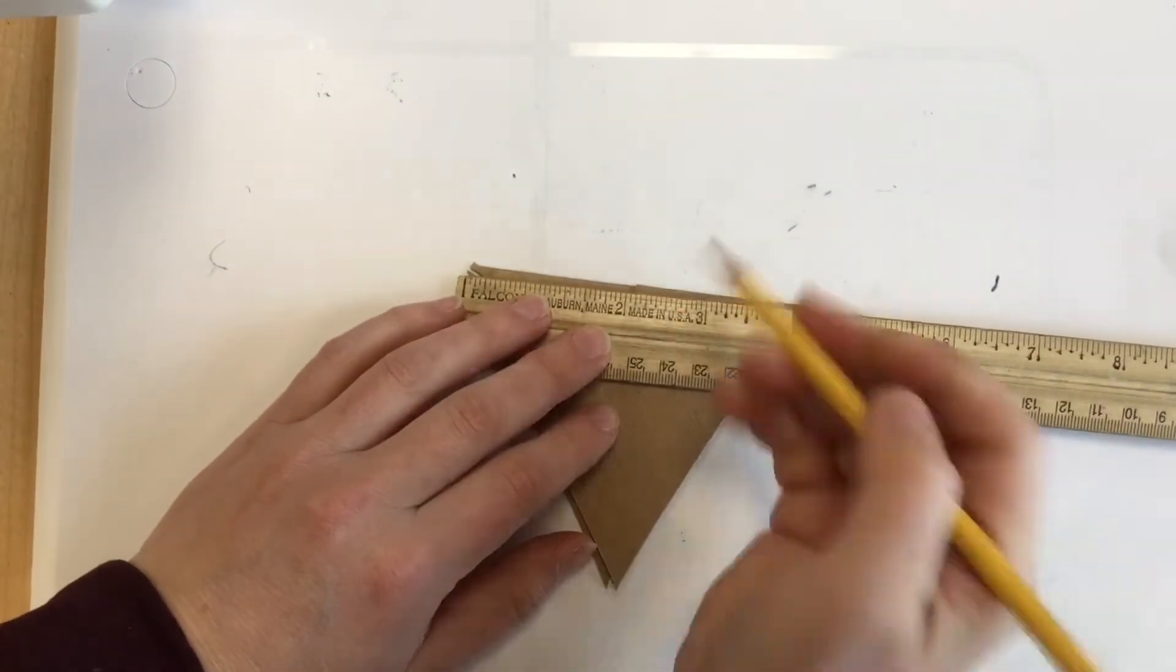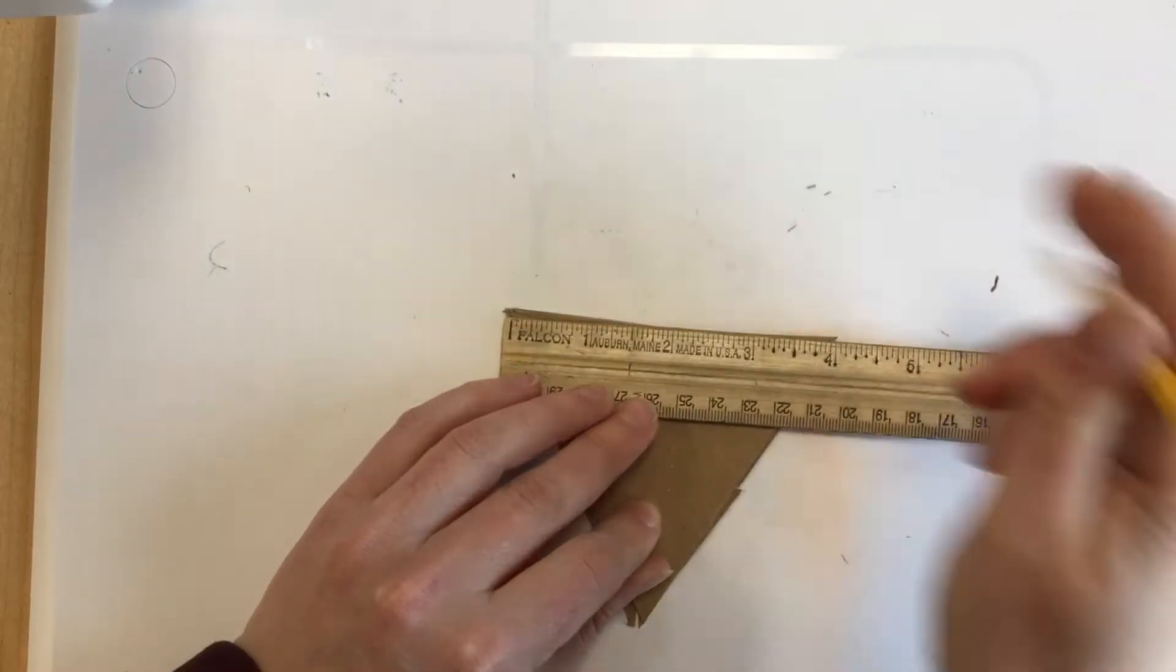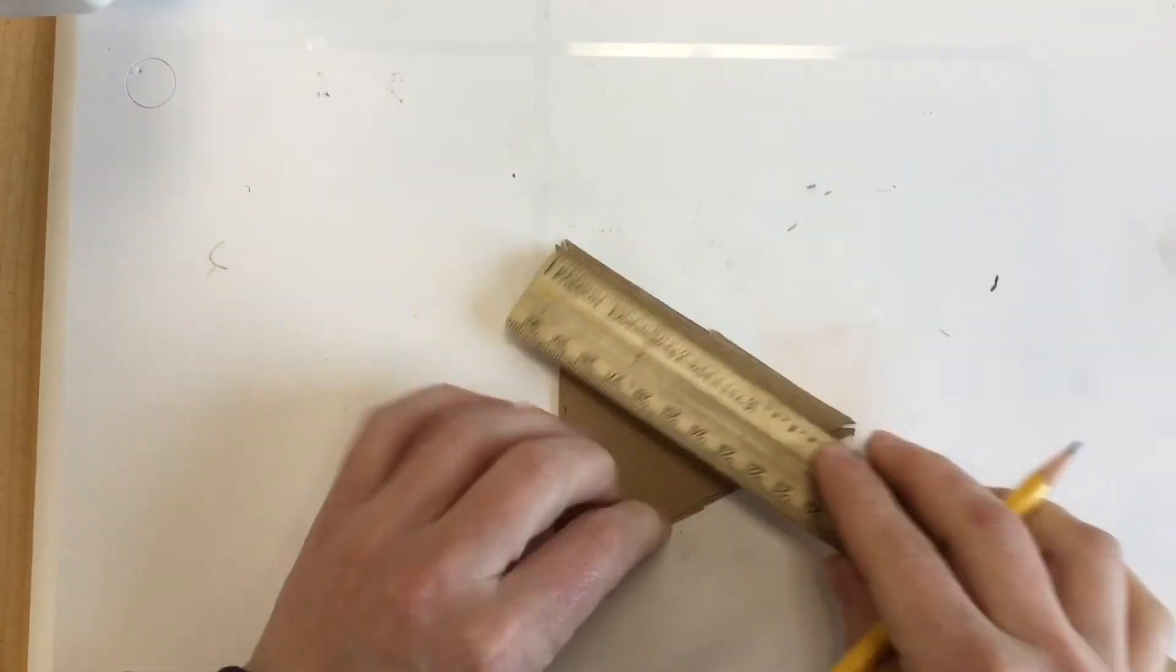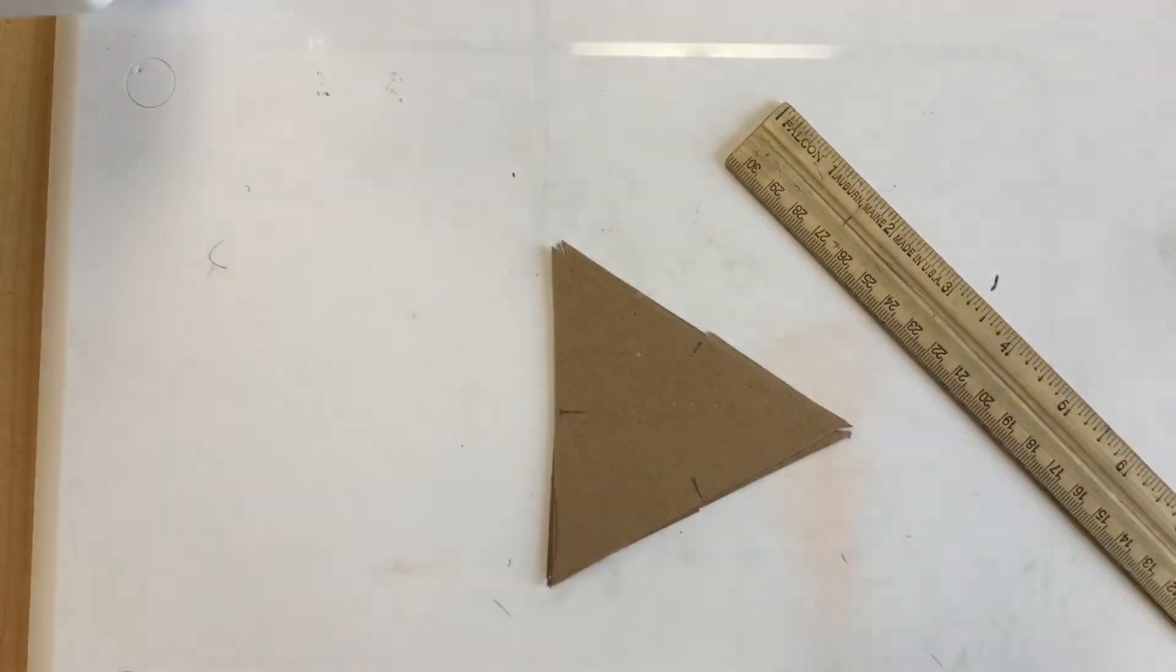Hey guys! The first step is to use an equilateral triangle and mark the middle point on all three sides. So my triangle is 4 inches on each side, so I'm marking 2 inches exactly on each side.